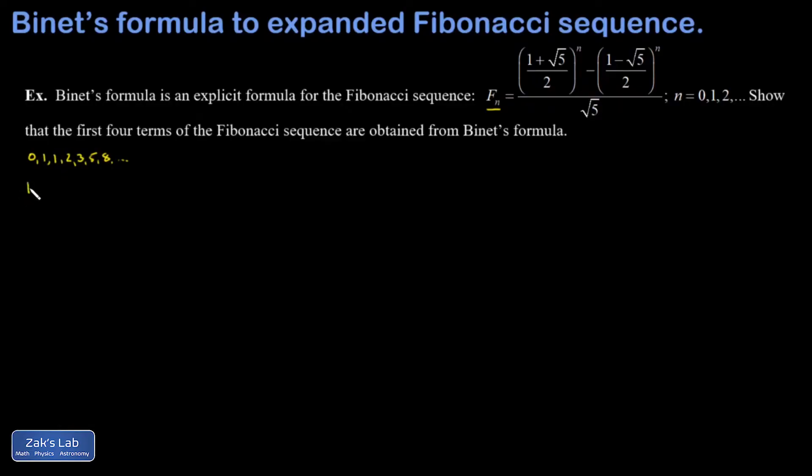So let's look at F0, and when I plug in 0 for n, that makes both of these terms in the numerator equal to 1, and I get 1 minus 1 over root 5, which is 0. So no big deal on that one.